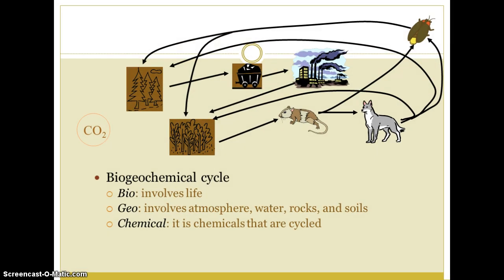Biogeochemical cycles describe the complete path a chemical takes through the atmosphere, hydrosphere, lithosphere, and biosphere. Bio involves life. Geo involves atmosphere, water, rocks, and soil. And chemical involves the chemicals that are cycled.